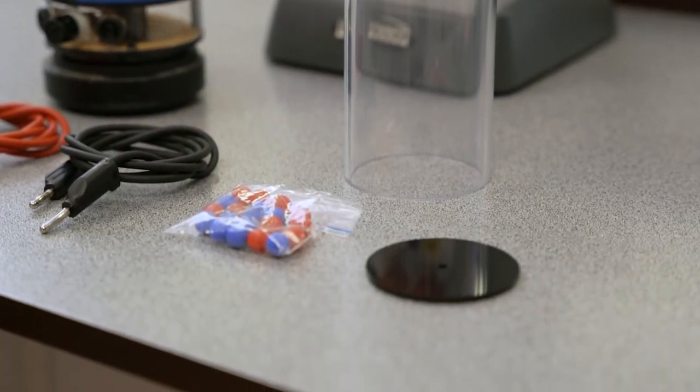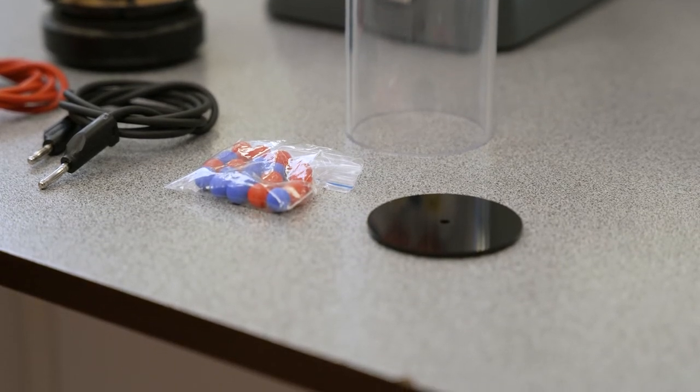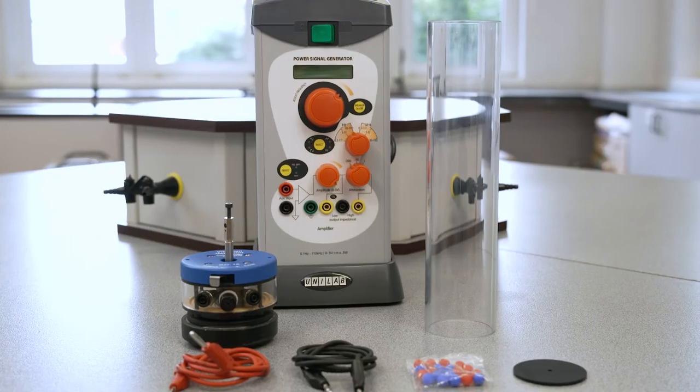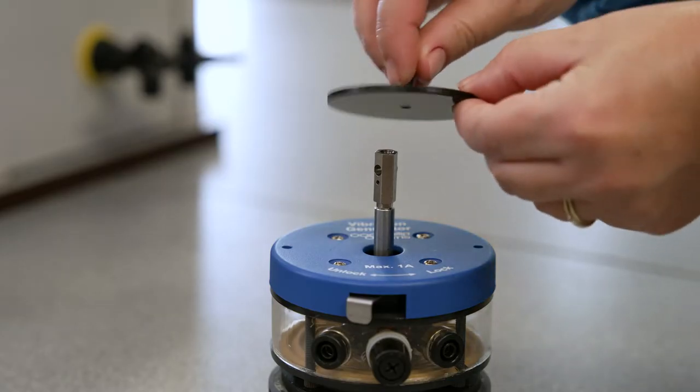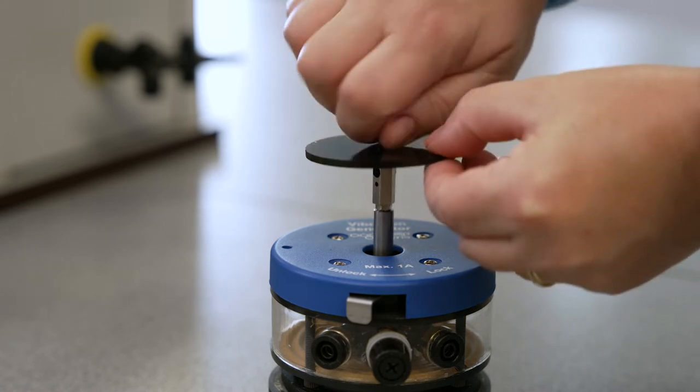To set up the experiment, screw the black disc from the accessory set onto the armature of the vibration generator and place the perspex tube over the top.